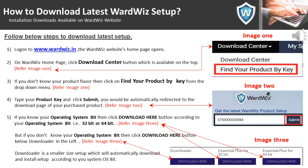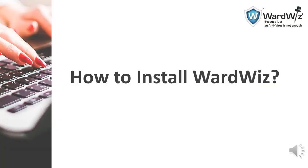If you know your operating system bit, then click the 'Download Here' button according to your operating system bit — that is 32-bit or 64-bit. But if you don't know your operating system bit, then click the 'Download Here' button below the downloader. The downloader is a smaller setup which will automatically download and install the setup according to your operating system bit.